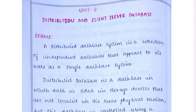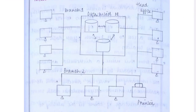A Distributed Database Management System is a collection of independent databases that appears to users as a single database. For example, it collects data from various databases but shows it as a single database to the users. Data is stored in storage devices that are not located in the same physical location — it is stored in multiple computers.